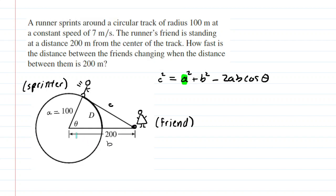And then similarly, b is also a constant because b represents the distance that the friend is standing from the center. And so she's always standing a distance of 200 meters from the center, no matter where the runner is along the track. So b is going to be a constant as well.